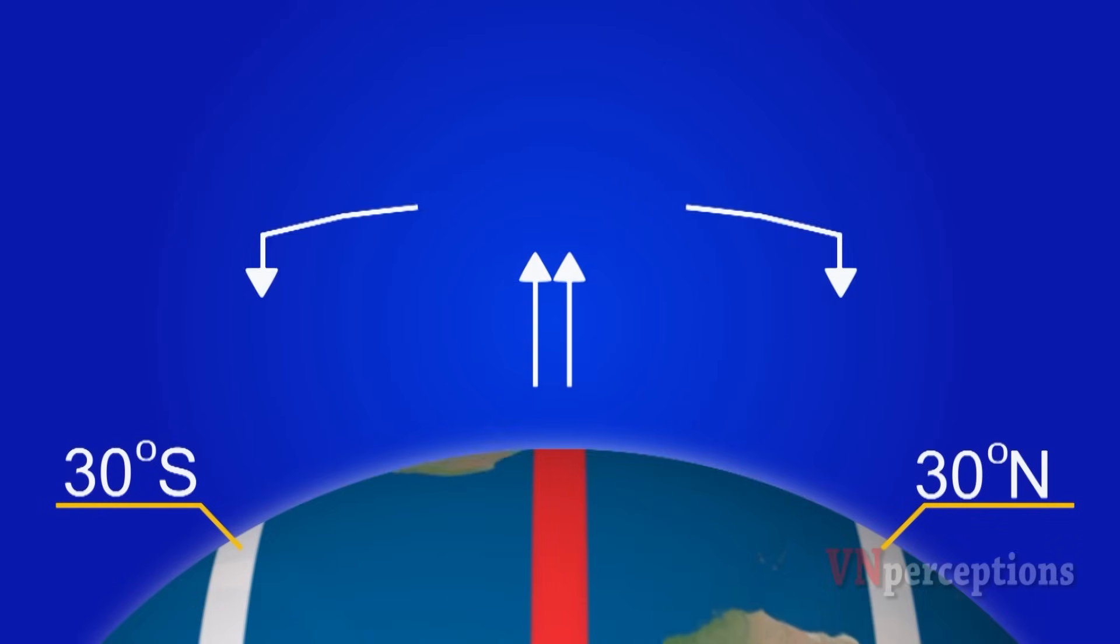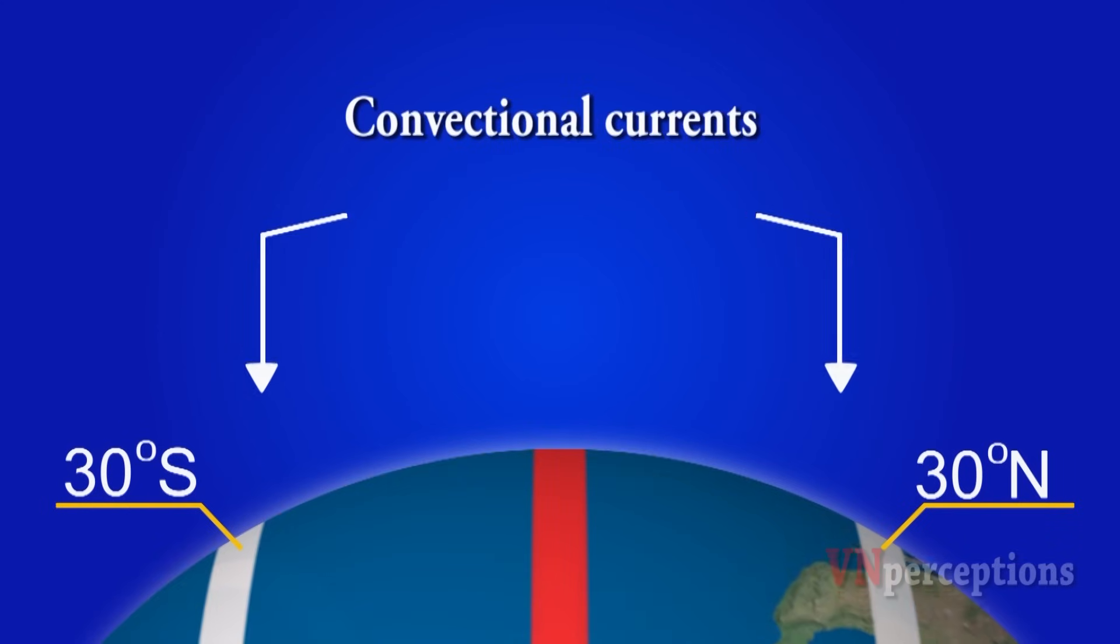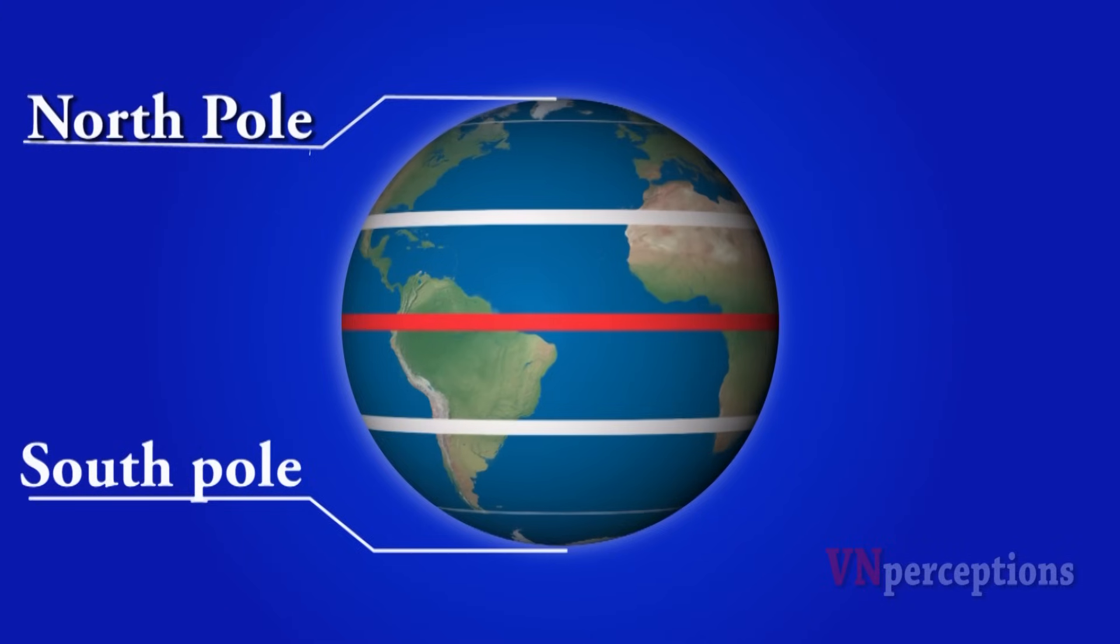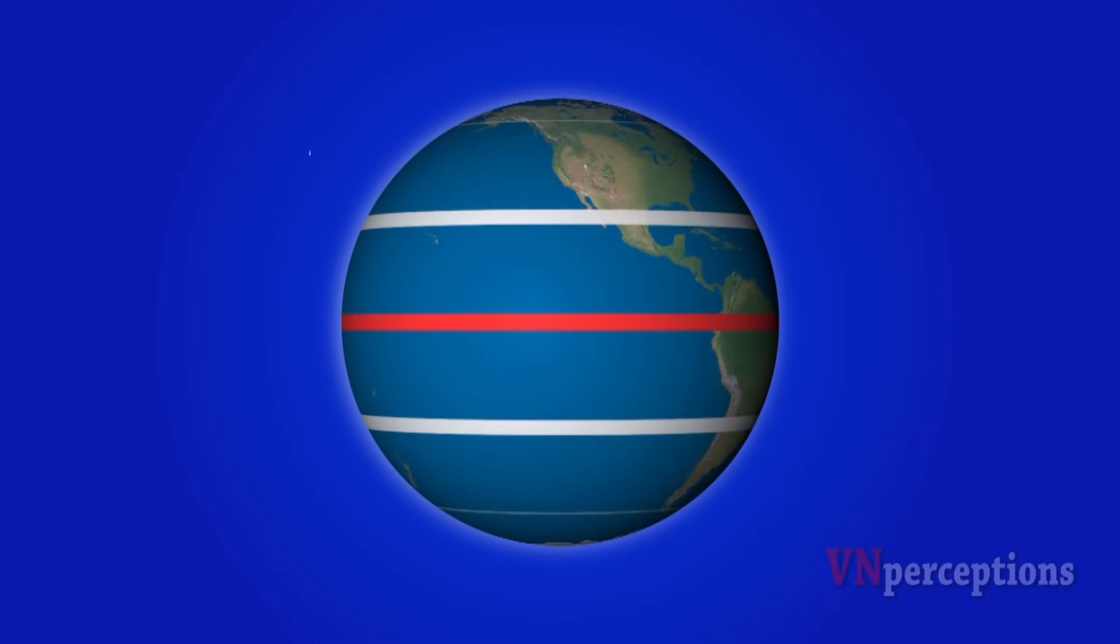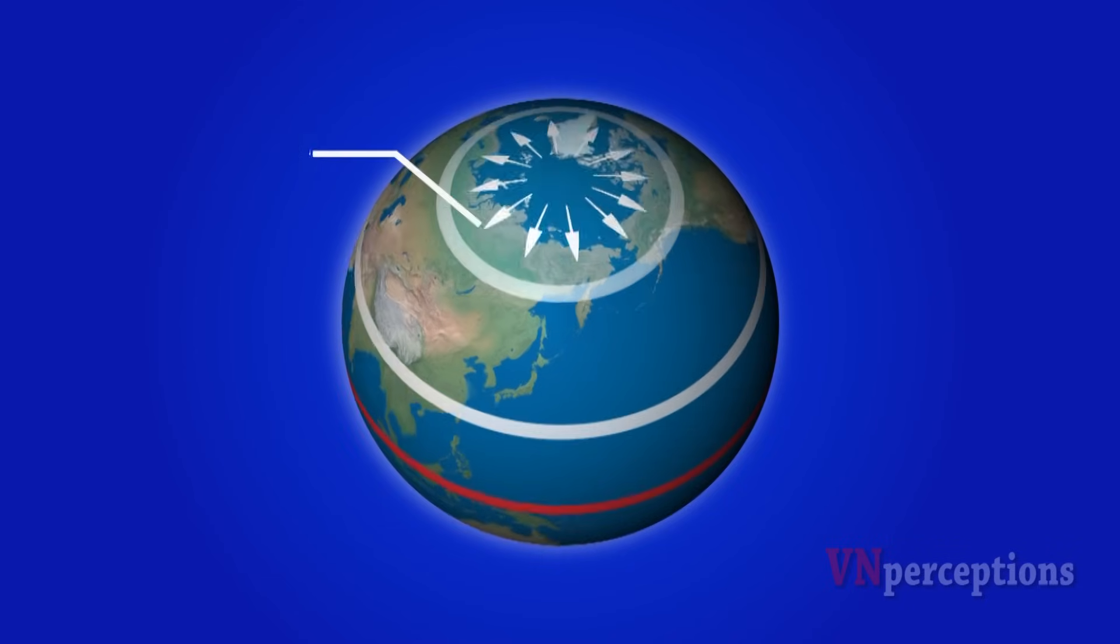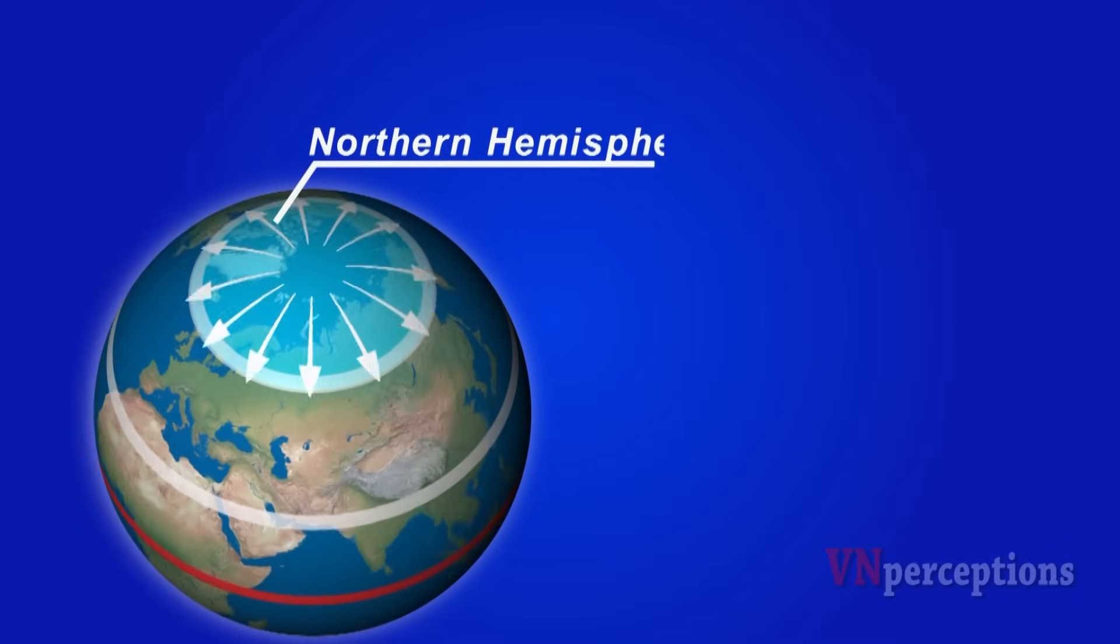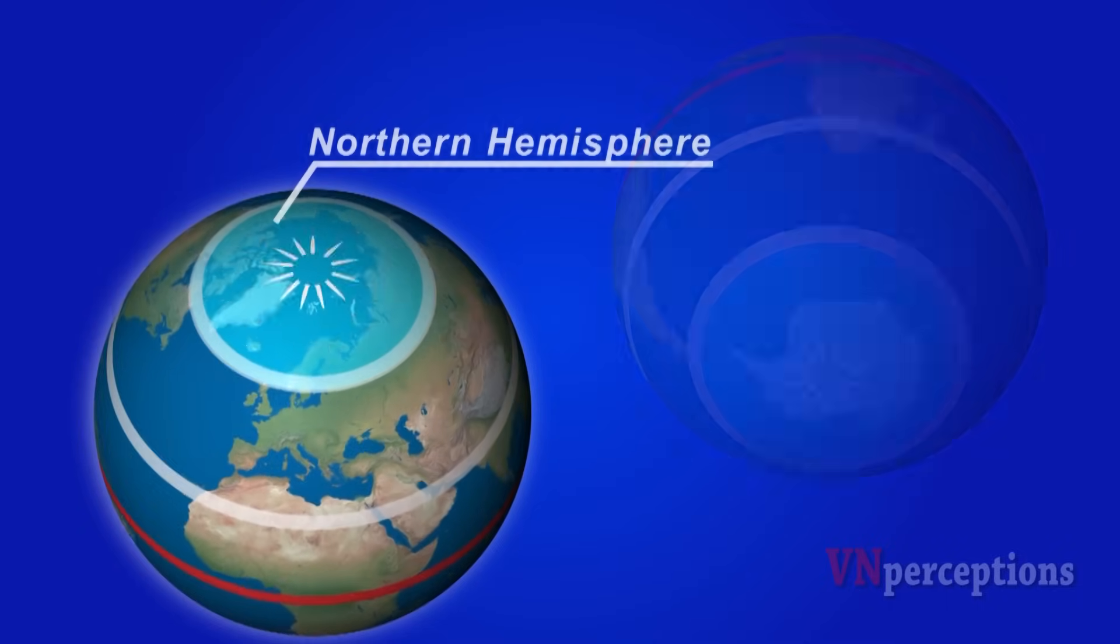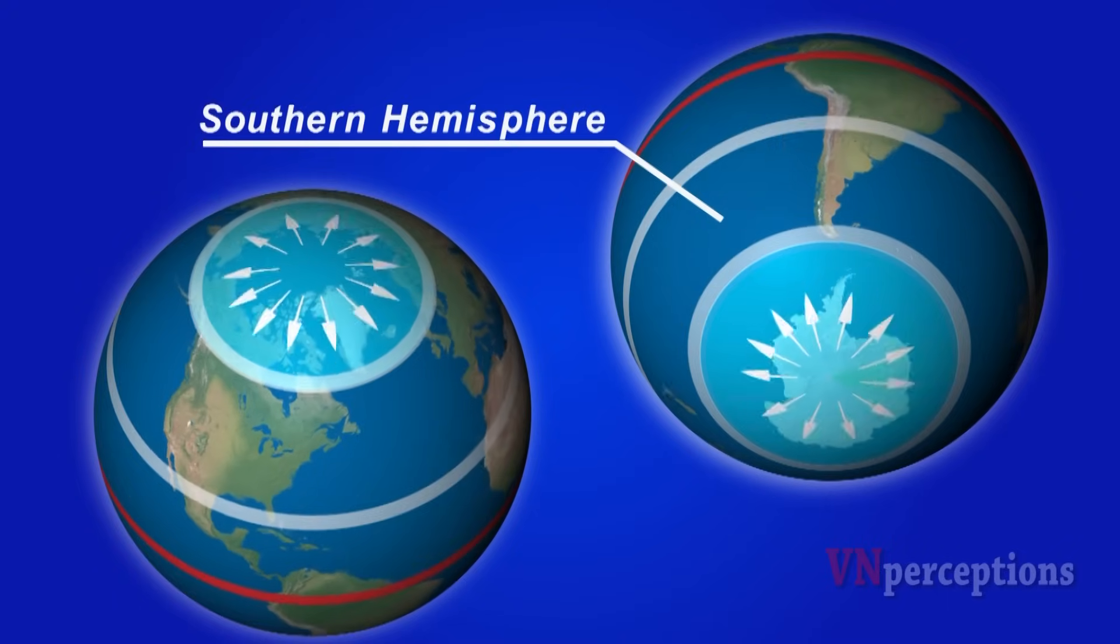At the poles the sun rays are very much inclined so we have cold air that sinks. These regions are known as polar highs. In the northern hemisphere the air moves towards the south and in the southern hemisphere the air moves towards north.